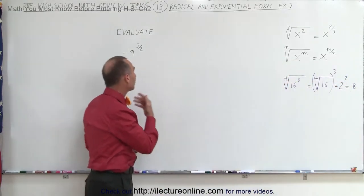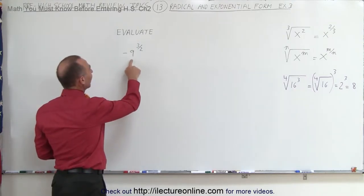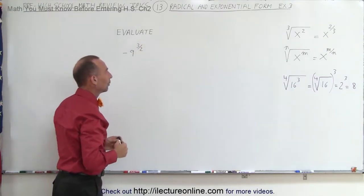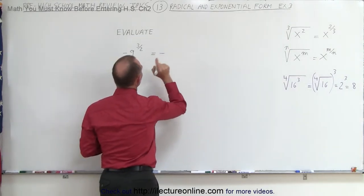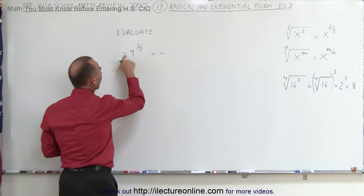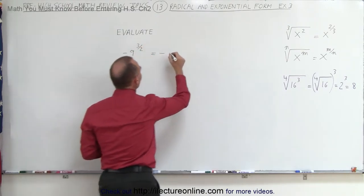So let's try that now on this particular example. Here we have minus 9 raised to the 3 halves power. We're going to write that in radical form. If we do, this is equal to negative, and again, be careful, the negative sign is not affected by the exponent, so we put it to the outside.